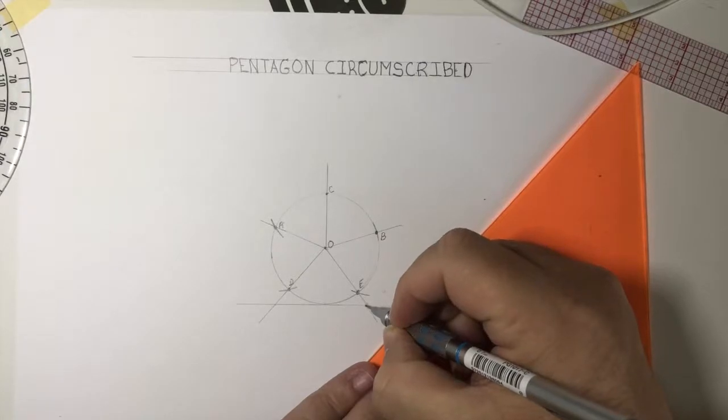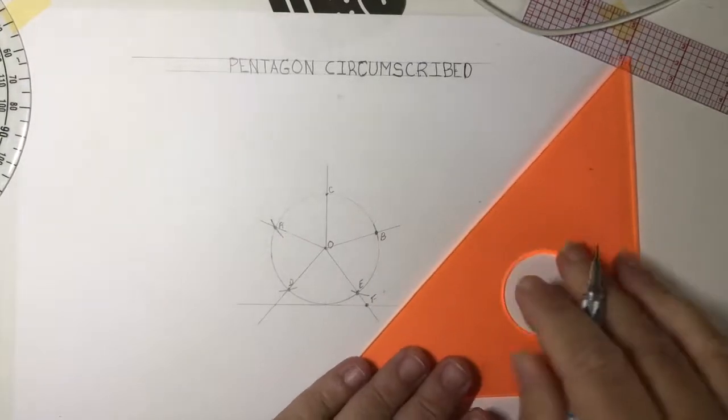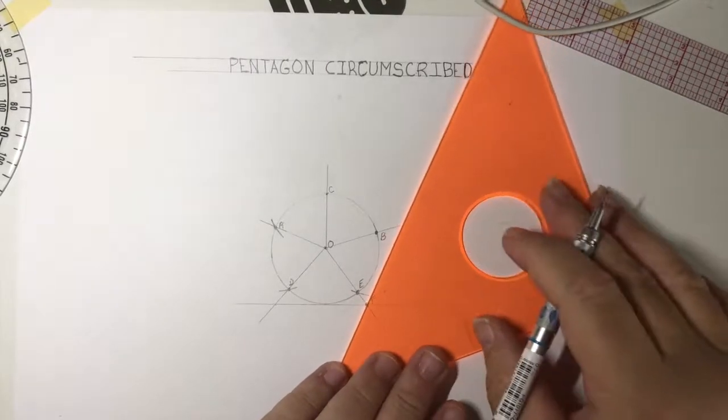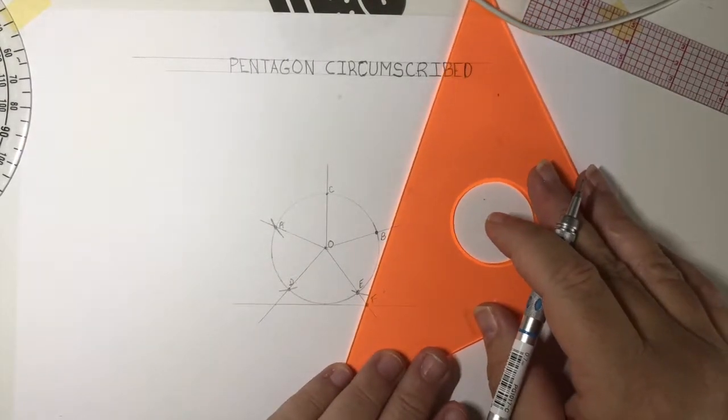This is actually going to be point F. So I'm going to draw from point F. I'm going to get my straight edge tangent with the circle.